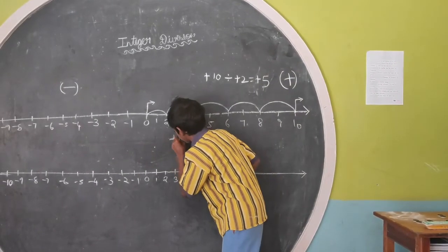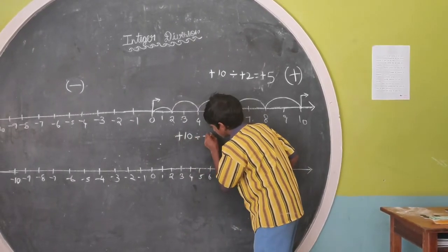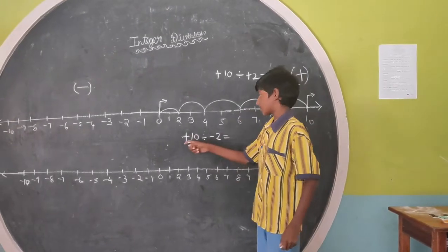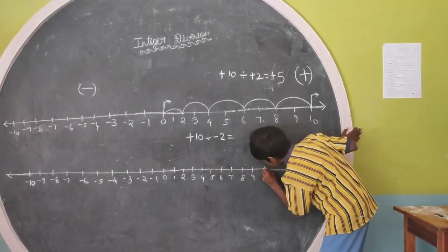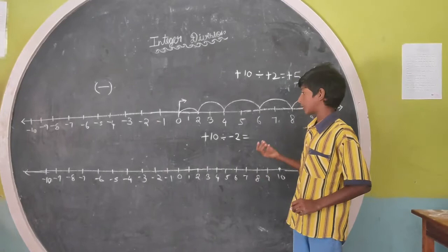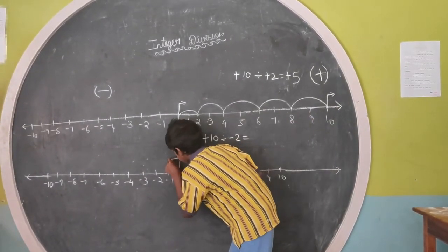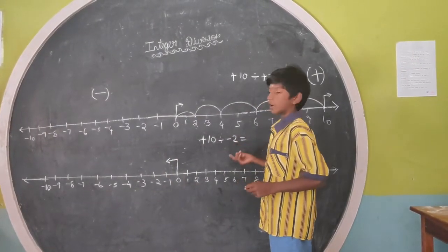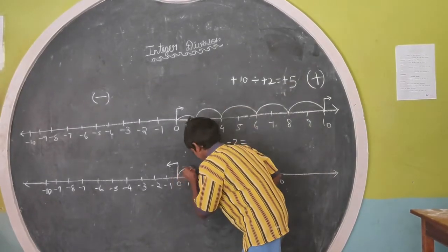Another problem is plus 10, minus 2. First I take plus 10, point on number line. This minus 6 and I am looking on that side, this is, I go, I go 2 steps. Step.